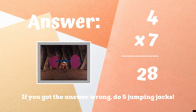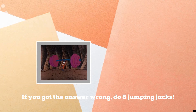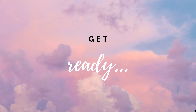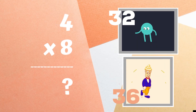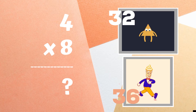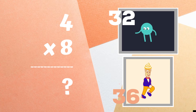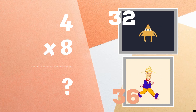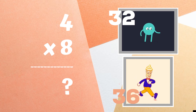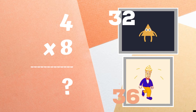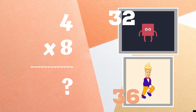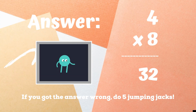If not, you have five jumping jacks to do. Ready, go. Get ready. Four times eight equals — copy the exercise next to the numbers you think are correct. The correct answer was 32. If you got this one right, great job.